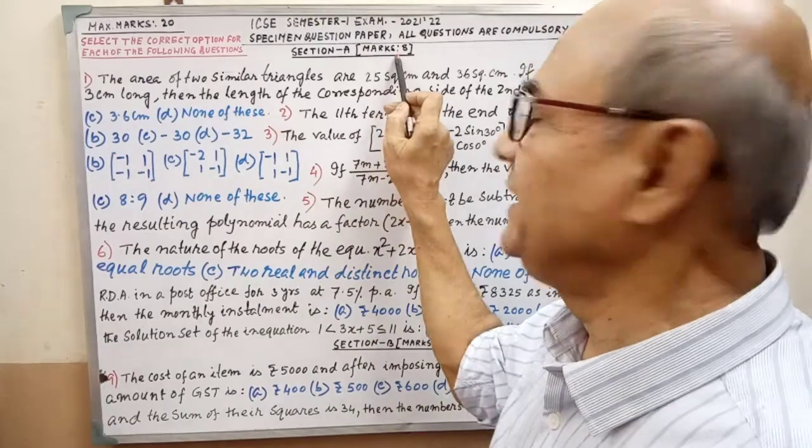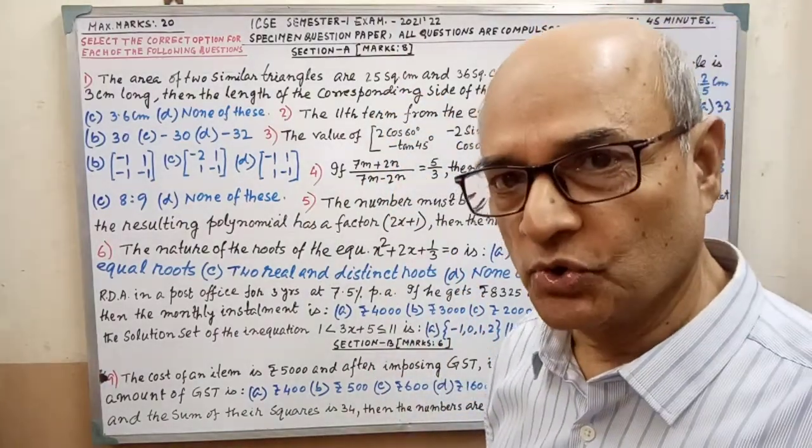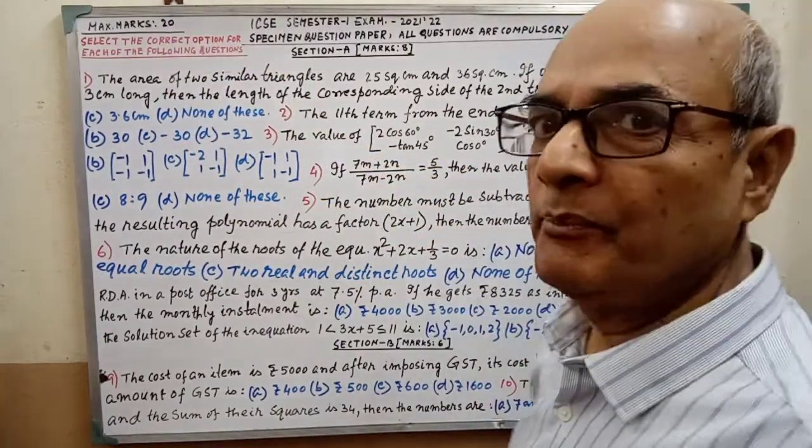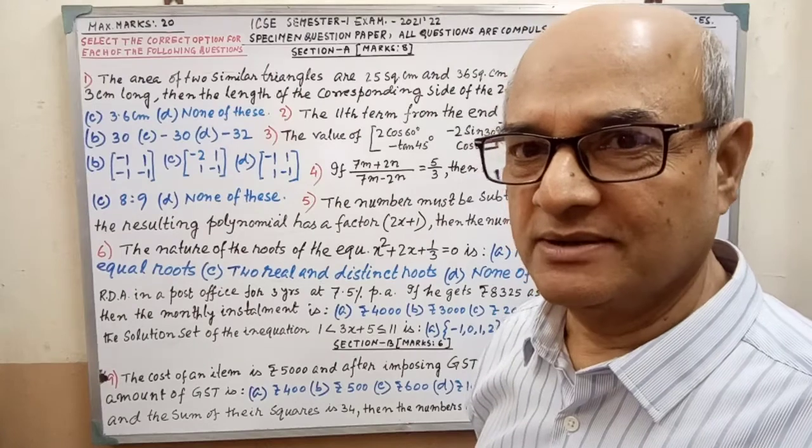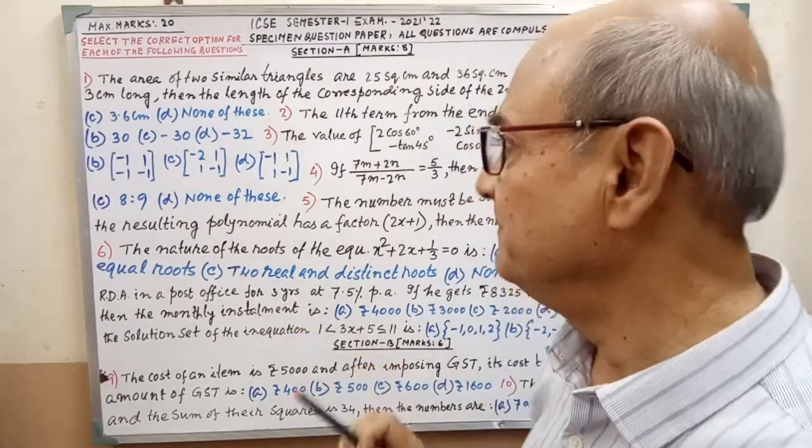Section A is 8 marks, Section B is 6 marks and Section C is also 6 marks. Total marks 20 and time 45 minutes. You must notice the time attentively.